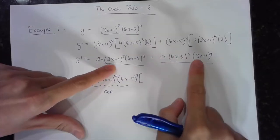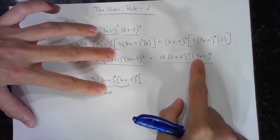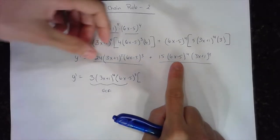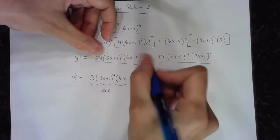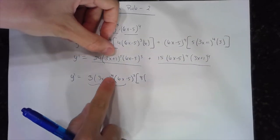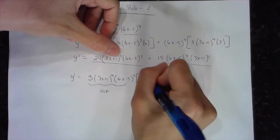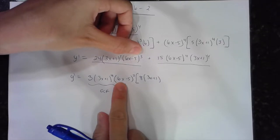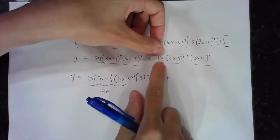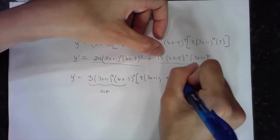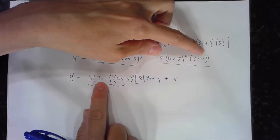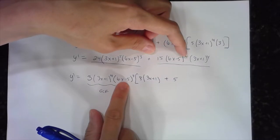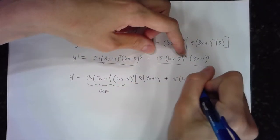So all of this is my GCF — both have a 3 in common, both have at least (3x + 1)^4, and both have (6x - 5)^3. What's left? From the 24 I took out 3, so I have 8 left. I took out 4 of the (3x + 1)s; this had 5, so I need one more. I took out 3 of the (6x - 5)s; I had 3 to begin with, so none left there. From the 15, taking out 3 leaves 5. The (3x + 1)^4 is fully used. I had 4 of the (6x - 5)s and took out 3, so I need one more.